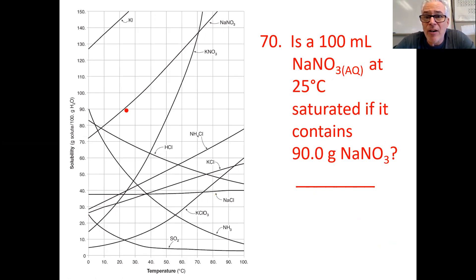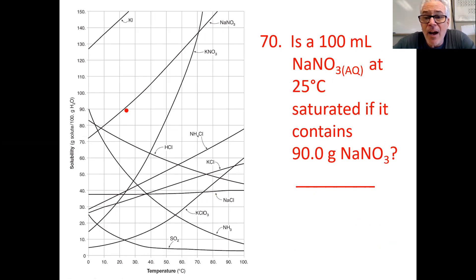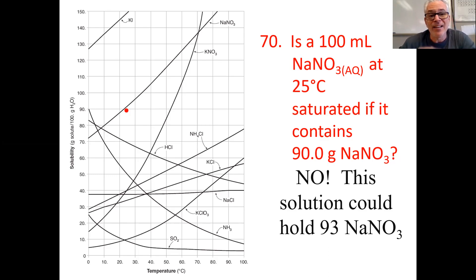Is 100 mL of NaNO3 at 25 degrees saturated if it contains 90 grams? We'll go to 25 degrees at the bottom and slide all the way up. That red dot there — that's 25 degrees and 90 grams. It looks like at 25 degrees it could hold about 92 grams. It's close, but the curve is above that 90-gram line, so it could hold at least 92 or 93 grams — certainly not just 90.